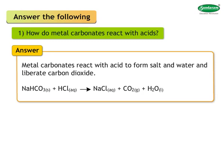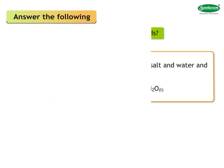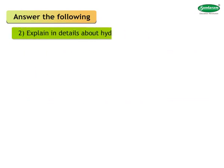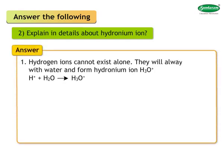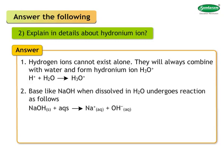Explain in detail about hydronium ion. Answer: Hydrogen ions cannot exist alone — they will always combine with water and form hydronium ion (H₃O⁺). The reaction is: H⁺ + H₂O → H₃O⁺.